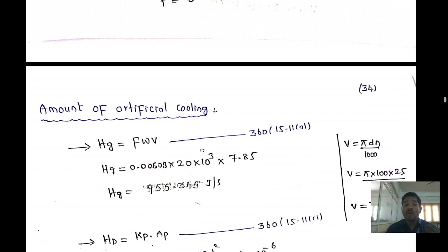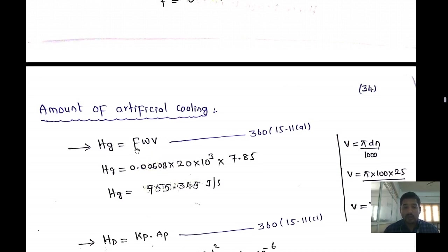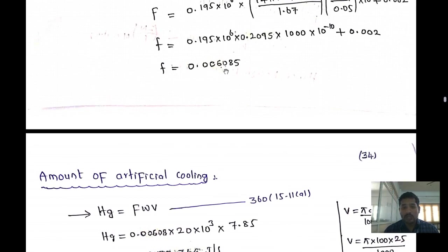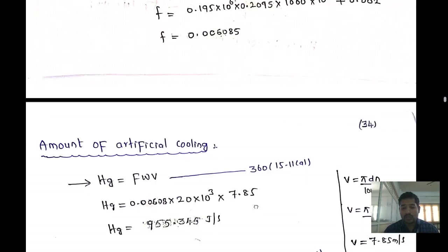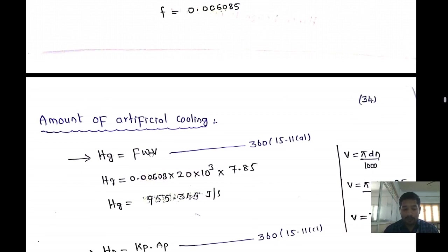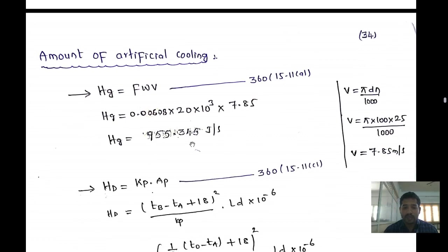Now we find the heat generated, heat dissipated, and the amount of artificial cooling required. Heat generated = μ × W × v. The rubbing velocity v = π × D × N / 1000 = π × 100 × 25 / 1000 = 7.85 m/s. Therefore, Hg = 0.006085 × 20 × 10³ × 7.85 = 955.345 J/s.